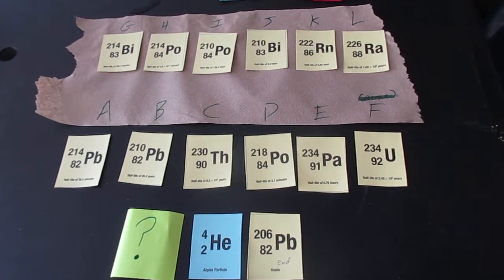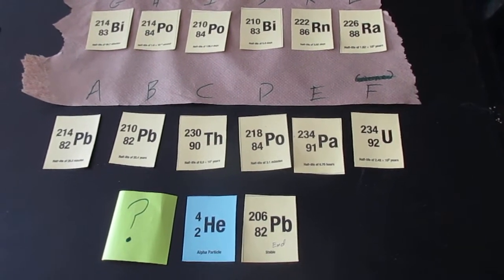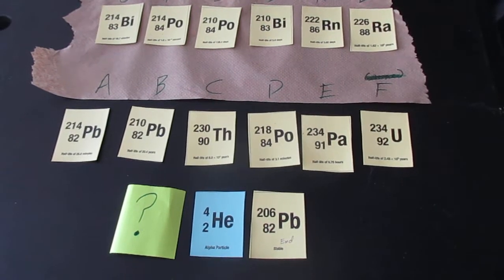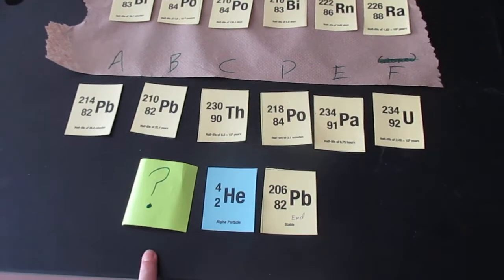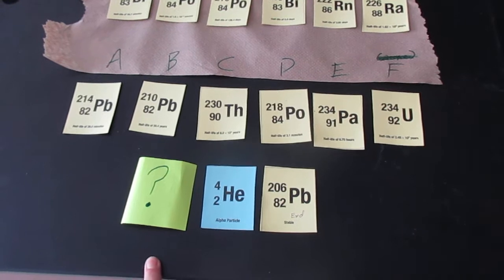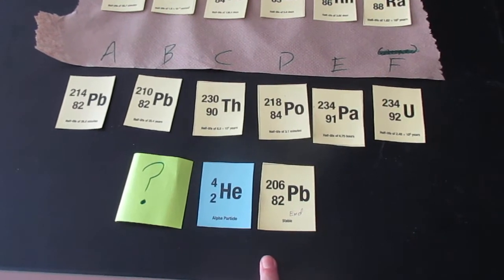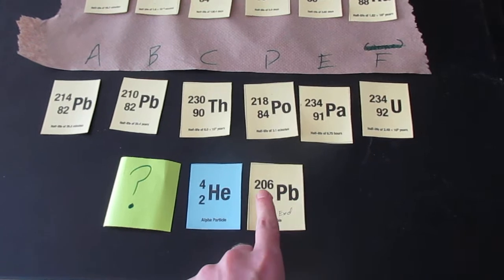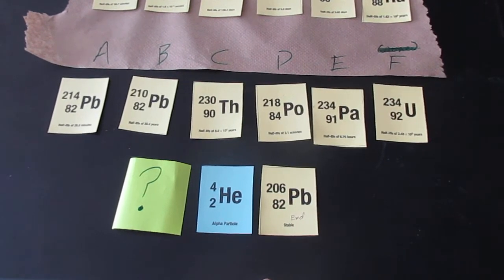For the next bigger reaction, what we're going to do is ask the questions a little bit differently. Our goal is to figure out what we have to start with to undergo an alpha decay and to end with a stable Lead-206 isotope.